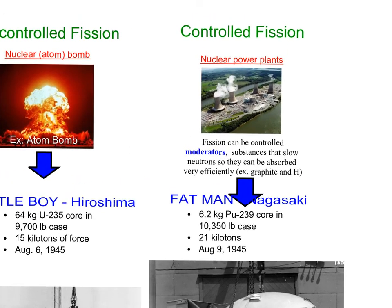Since 1945, we've learned how to control fission better. The same type of reaction used in an atomic bomb is now used in nuclear power plants, using something called a moderator or controller that essentially slows down the chain reaction so it doesn't all go off at once. It still happens, just much, much slower, and we can absorb that energy and use it to power homes and generate electricity.